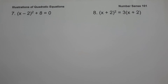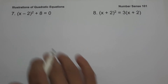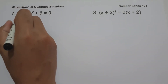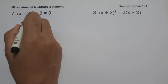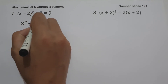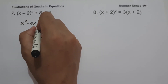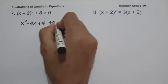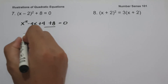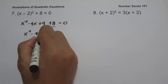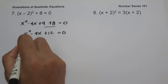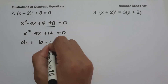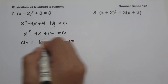On example number seven, we have (x minus 2) squared plus 8 equals zero. Expanding the binomial: x squared minus 4x plus 4 plus 8 equals zero. Combining: x squared minus 4x plus 12 equals zero. So a is 1, b is negative 4, and c is positive 12.